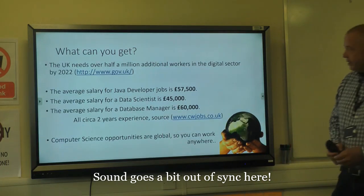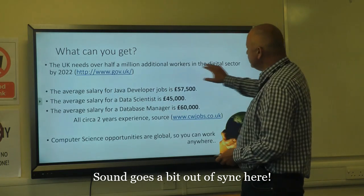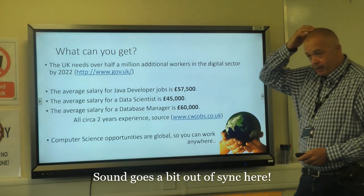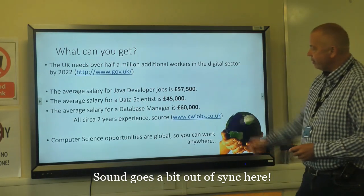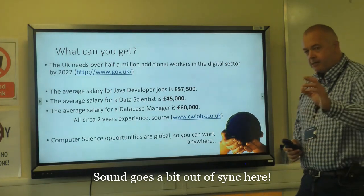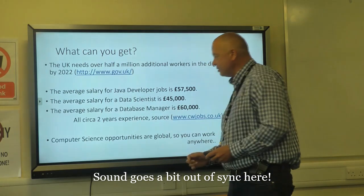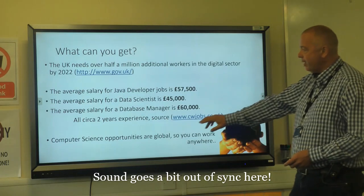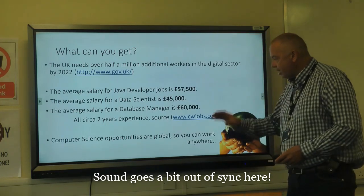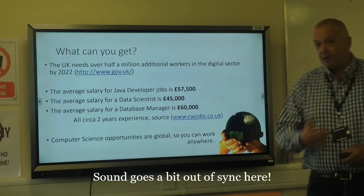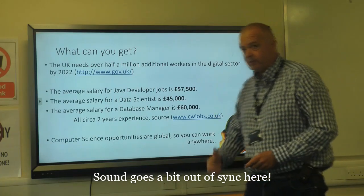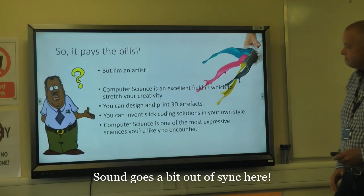The UK needs over half a million additional workers in the digital sector by 2022. A Java developer earns around £57,500 on average; a data scientist around £45,000; a database manager around £60,000. These are averages, not maximums. Computer science opportunities are global — you can work in Australia, America, Mexico, or anywhere you choose.